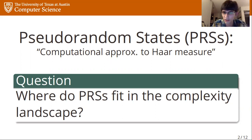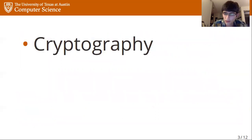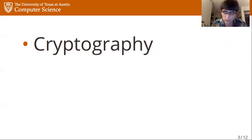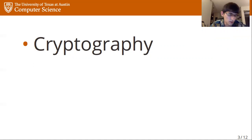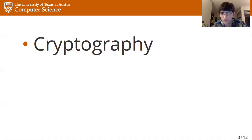The first thing I'll talk about before diving into details is why PRSs are interesting. There are a few applications discovered recently. The first is maybe the most obvious: pseudorandom states are a cryptographic pseudorandom primitive, and hence they can be used for cryptography. For instance, we know they can be used for quantum money schemes, but there are probably other examples yet to be discovered.